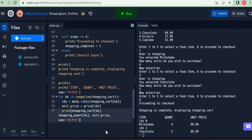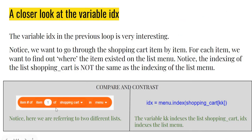Before wrapping up, let's look at the equivalent Scratch statements to clarify what we're doing. We take a given item — happening through the for loop — and find its position inside the list menu. In Python: idx = menu.index(shopping_cart[kk]). kk indexes the shopping cart list going 0, 1, 2, 3 and so forth; idx indexes the list menu, which is why it's menu.index. If you can relate these two and connect them with the visualization provided, it becomes logical and clear. I hope this helps — take care, thank you so much, bye bye.